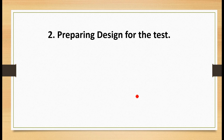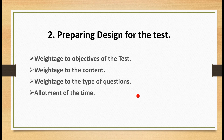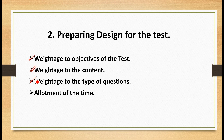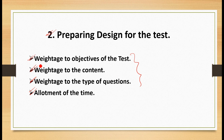Step two: preparing a design for the test. Having completed the first step of making a proper plan, we now prepare a design for the test. We need to keep four things in mind: weightage to the objectives of the test, weightage to the content, weightage to the types of questions, and allotment of time. We make a rough sketch of these points to prepare the initial design for the test.